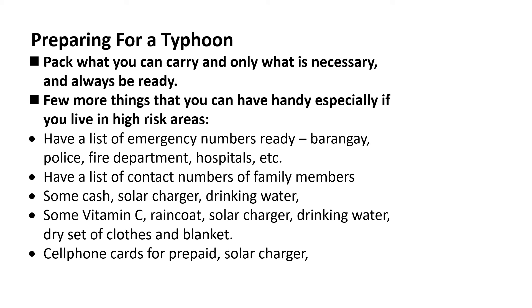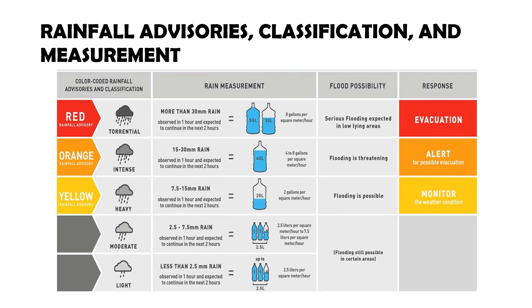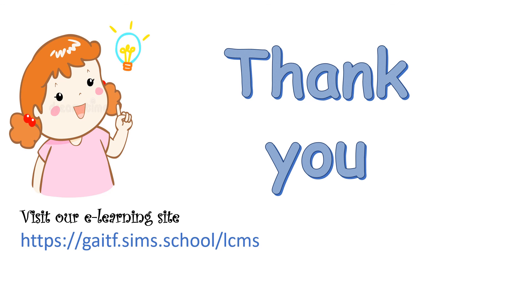You also have here the rainfall advisories classification and measurements — color-coded rainfall advisories. This is important for you to know how to respond: what are you going to do when there is a Red, Orange, or Yellow advisory? Be aware of these advisories and what the flood possibility is for each one — whether there is serious flooding, flooding is threatening, or flooding is possible. Know when you need to evacuate.